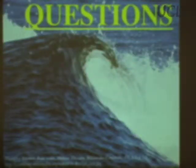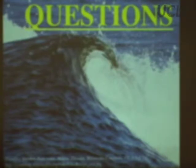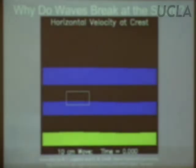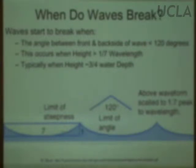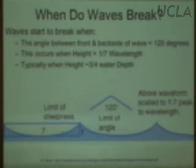The basic idea about the 120-degree angle is that the maximum energy a wave can carry efficiently is enough to displace the surface so that the peak makes an angle of about 120 degrees or more. When it gets steeper than that — flatter than 120 degrees at the crest — it tends to fall apart.